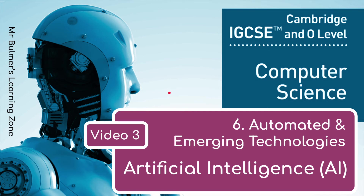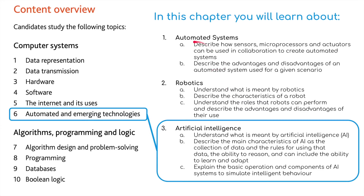Welcome back to the final video for Topic 6, Automated and Emerging Technologies. This time we're going to be looking at Artificial Intelligence, and this is part of the IGCSE from Cambridge. The first video was Automatic Systems, the second video we looked at was Robotics, and now we're looking at Artificial Intelligence, covering three different disciplines.